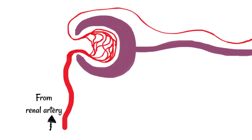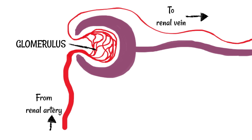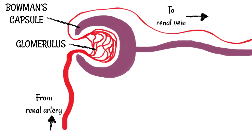Blood entering comes from a branch of the renal artery through a blood vessel which is relatively wide compared to the blood vessel leaving this area, which will eventually connect up to the renal vein. In between is a capillary network known as the glomerulus. Because the blood vessel that enters is wider, it gets a little constricted as it tries to leave after the glomerulus, resulting in really high pressure inside the glomerulus. The area surrounding this is known as the Bowman's capsule, or renal capsule, and the high pressure forces material to move from the glomerulus into the Bowman's capsule.